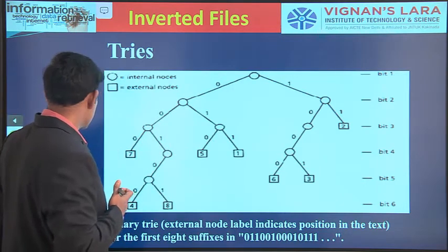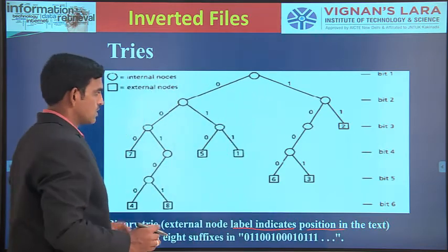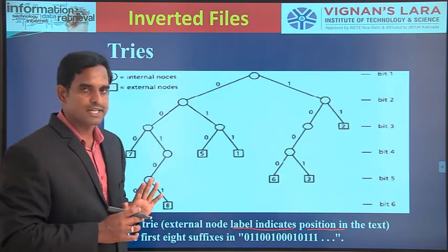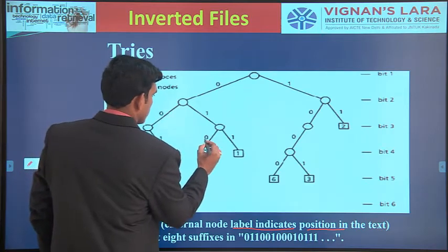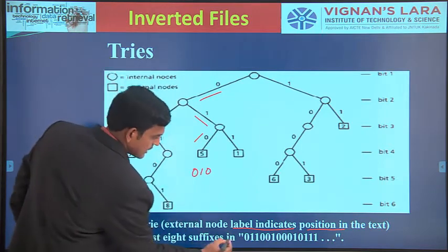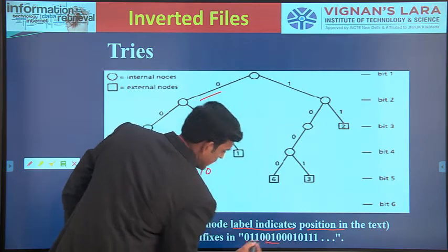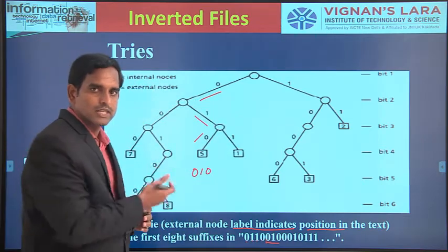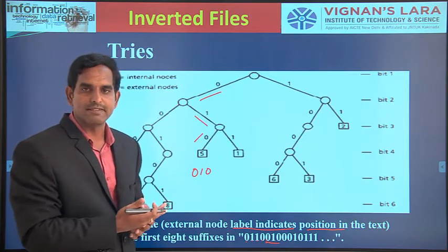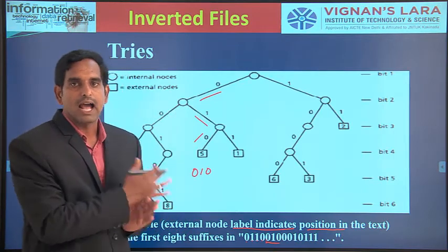This is an example of a trie and how you are going to implement it. Each leaf node label indicates the position in the text. For example, from the 5th position we have the sequence 0, 1, 0, 1. In this manner, your keywords can be represented as a trie, making searching easy. You can find the position of your keyword much more easily in a trie.